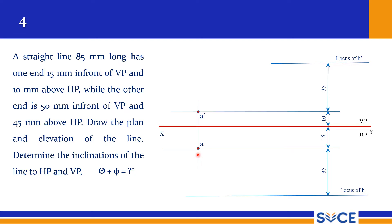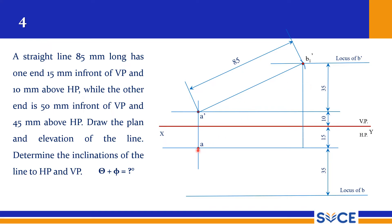We know the true length is 85 mm, so from A-dash, with 85 mm as radius, cut an arc on the locus of B-dash line. That intersection becomes B1-dash. Now draw a projector from B1-dash up to the locus of A line and mark B1. A-B1 is our top view distance. With A as center and A-B1 as radius, rotate until it meets the locus of B to get point B directly.